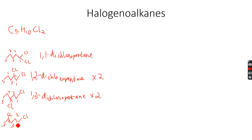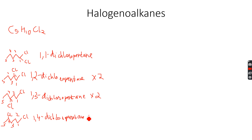This time, instead of the third, the chlorine atom is on the fourth carbon, so this becomes 1,4-dichloropentane. The fourth carbon atom is a chiral center, so again this will be two stereoisomers for this one.